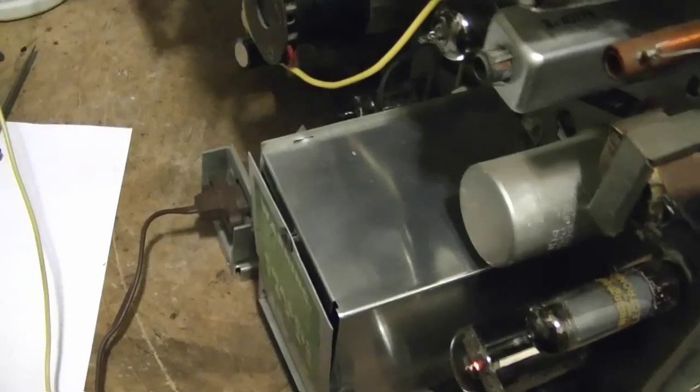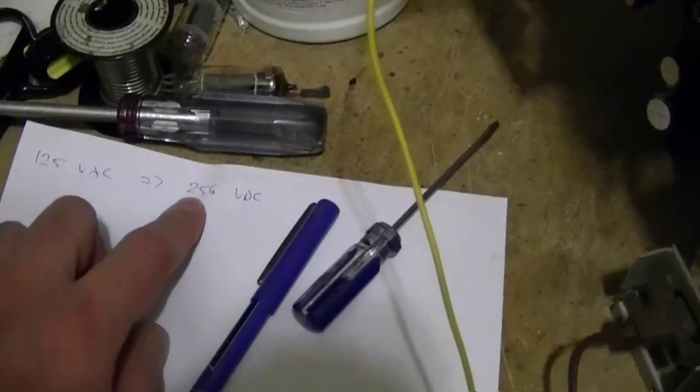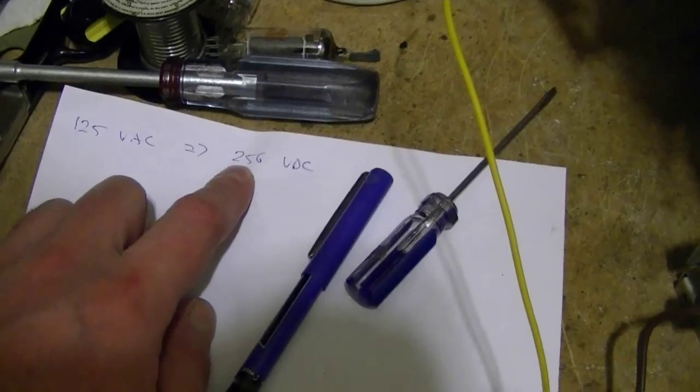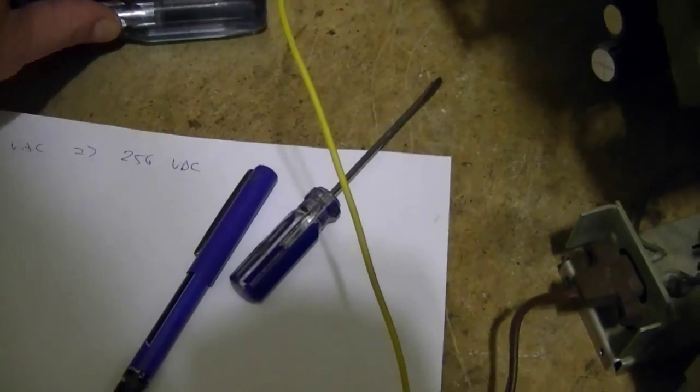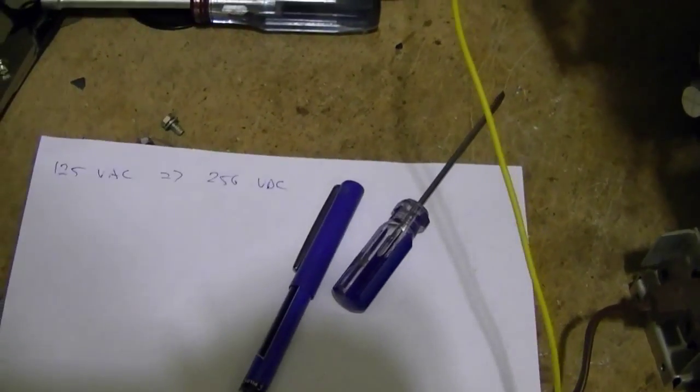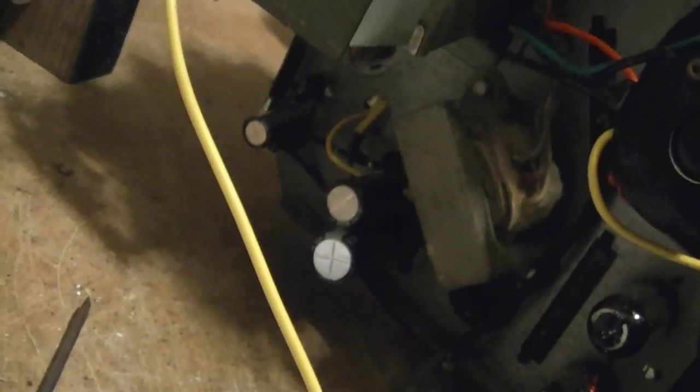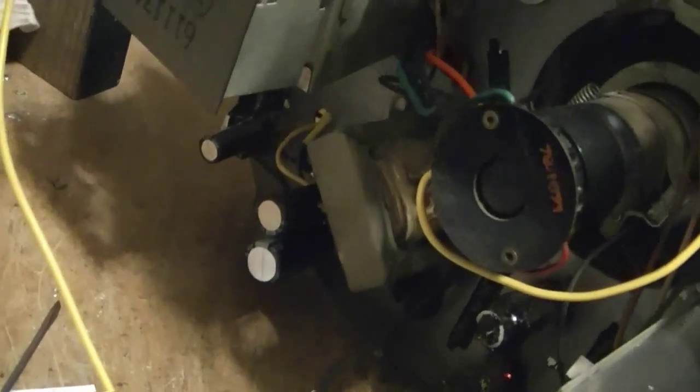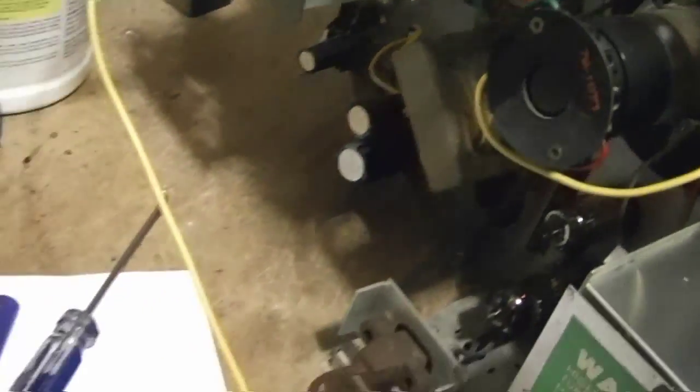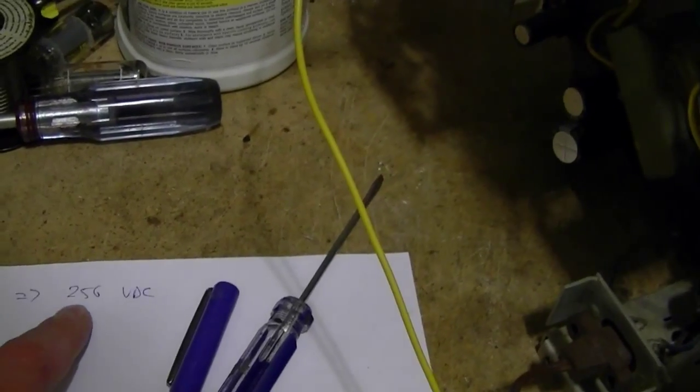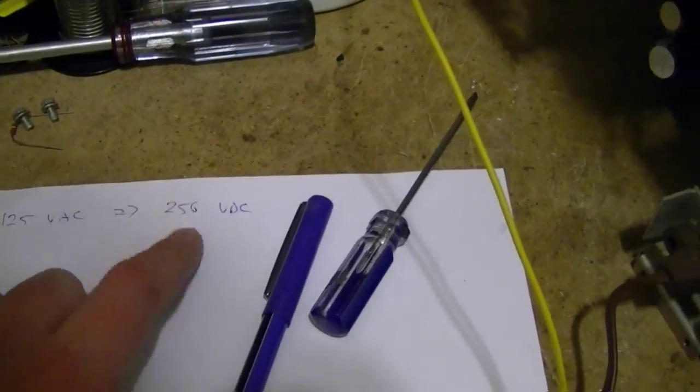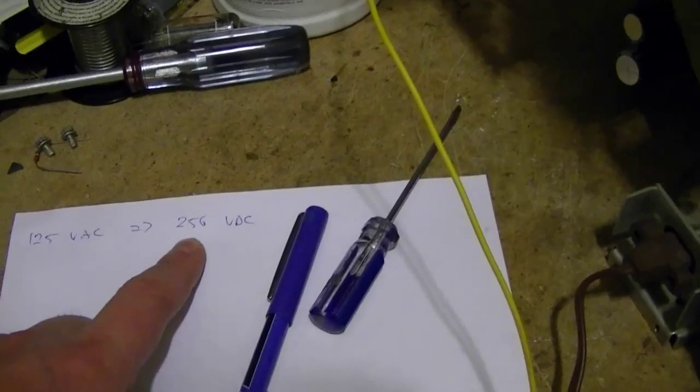With that going, I measured B plus on the set, which should be 245, and I've got 256, which actually is not as high as I thought it would be. Because if you recall, I took out the seleniums and have modern silicon diodes down in there, which have less loss, and I also took out the fusible resistor. So right now, there's nothing to drop the voltage down whatsoever, but we're only about 10 volts high.